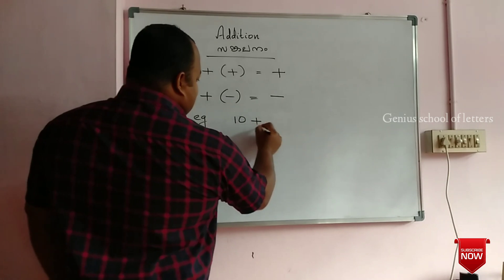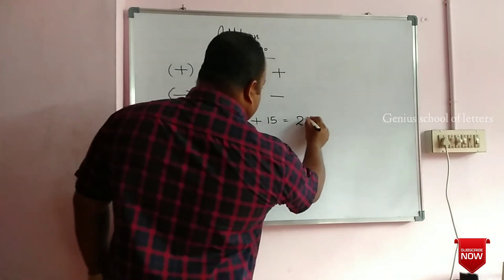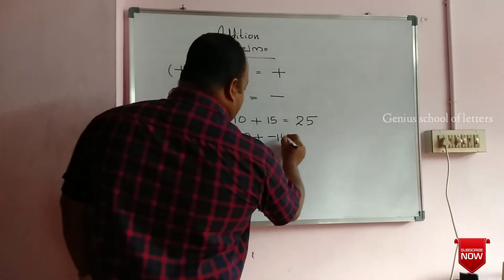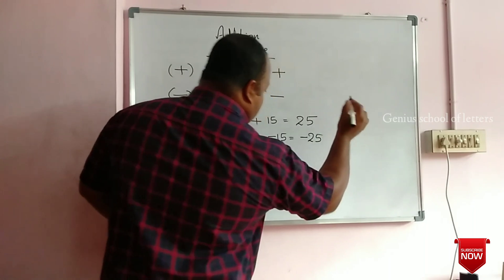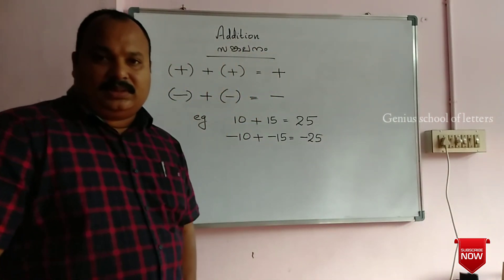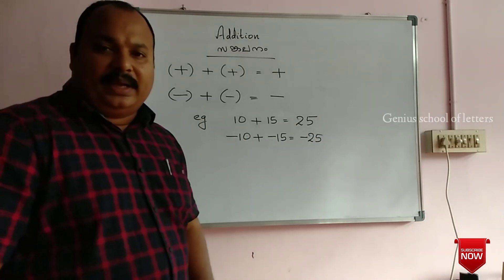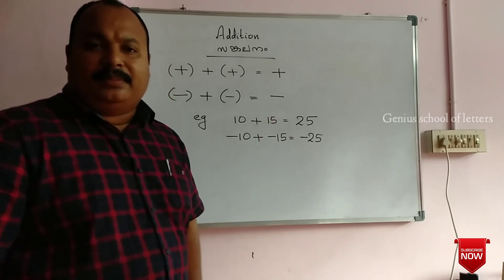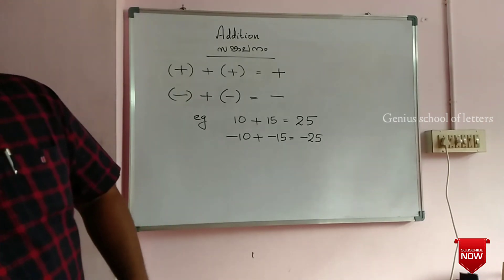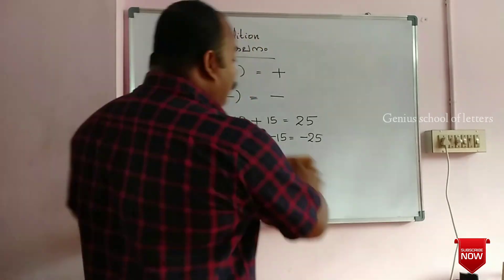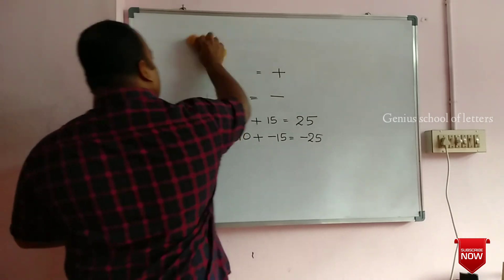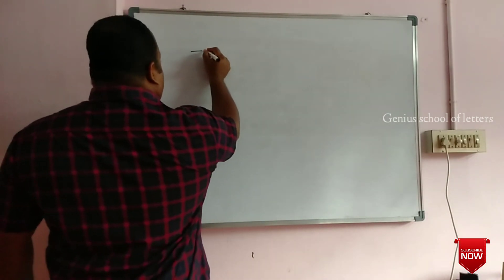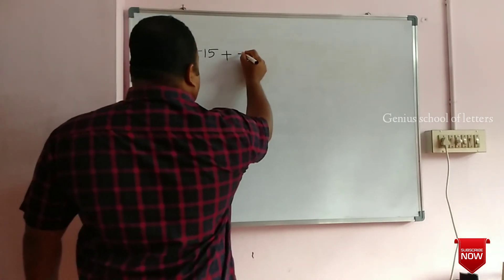10 plus 15 — answer 25. Negative 10 plus negative 15 — answer negative 25. Answer positive 25. Negative 25. Answer negative 25. Answer positive 25. Negative 15 plus positive 10 — answer negative 25.